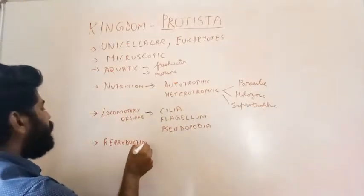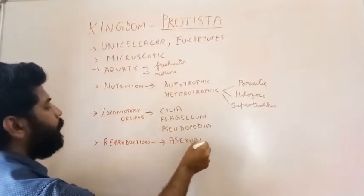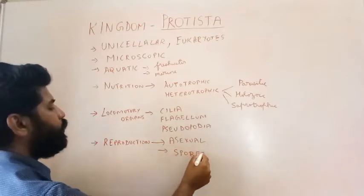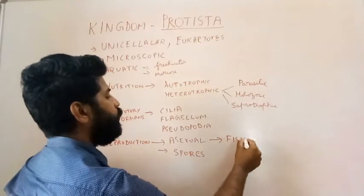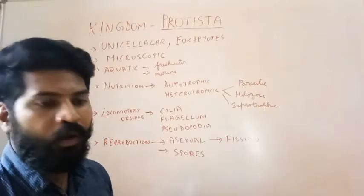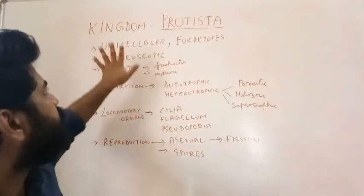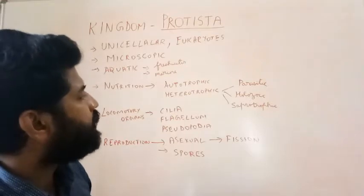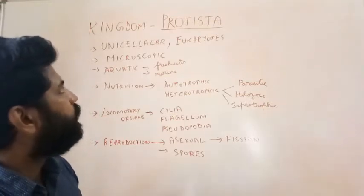Mostly they reproduce by asexual method. Sometimes they also produce spores. Asexual reproduction is by means of fission. Sexual reproduction is completely absent. These are the general features of Kingdom Protista. Kingdom Protista is further classified into five phylums.